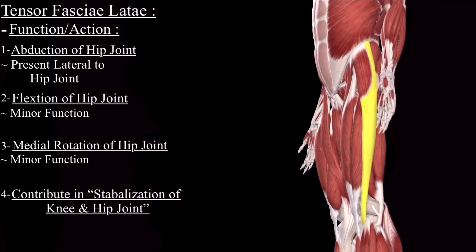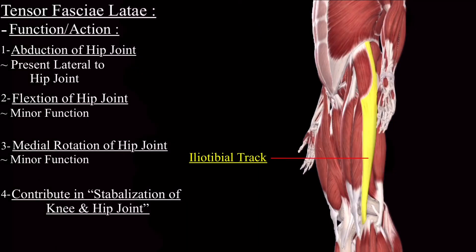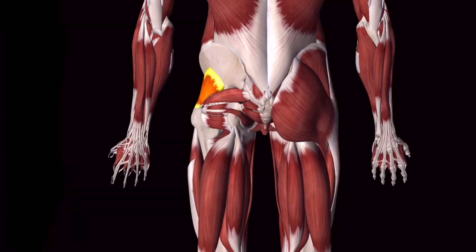The tensor fasciolata contributes to stabilization because the iliotibial tract stabilizes the knee and the hip joint, and the tensor fasciolata inserts on the iliotibial tract, so it contributes in the stabilization of the knee and the hip joint.